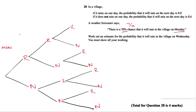We have Monday here, Tuesday here, and Wednesday here. R is for rain and N is for no rain. There's a 70% chance it will rain on Monday, which means there's a 30% chance it will not rain on Monday. On Tuesday, if it rains one day the probability it will rain the next day is 0.8, so if it rains on Monday the probability it will rain on Tuesday is 0.8.